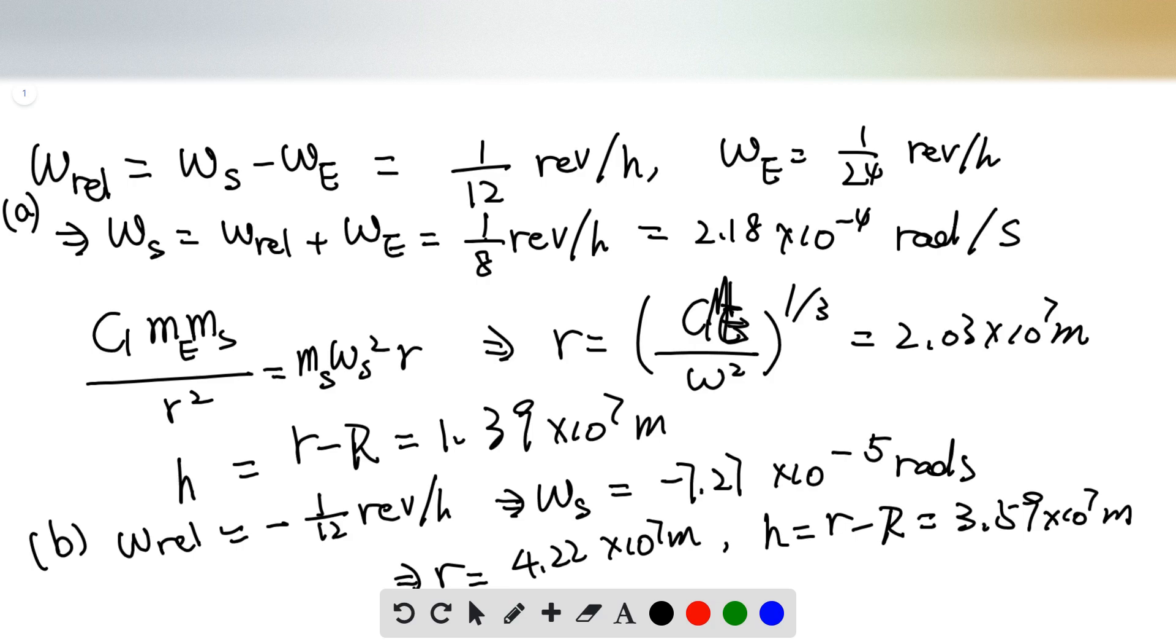We still need to minus the radius of the Earth to get the final height is equal to 1.39 times 10 to the 7 meters.